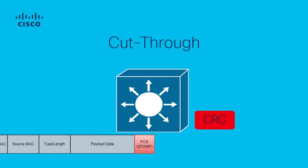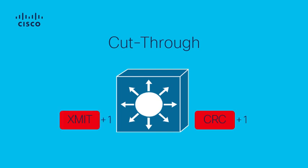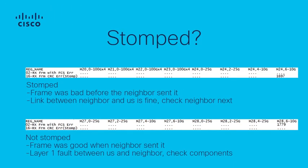After the frame is stomped, the switch takes three actions: it finishes forwarding the remainder of the frame including the now stomped FCS field; it then increments the CRC input errors on the interface that the frame arrived at; and finally, it increments a transmit error on the egress interface.